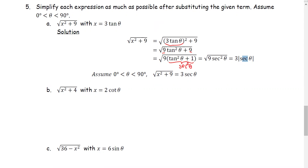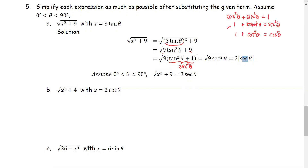As you recall the Pythagorean identities, the one we use most would be cosine squared theta plus sine squared theta equals 1, and the next is 1 plus tangent squared theta equals secant squared theta. In our problem, we are going to use the second one. So tangent squared theta plus 1 is equivalent to secant squared theta.